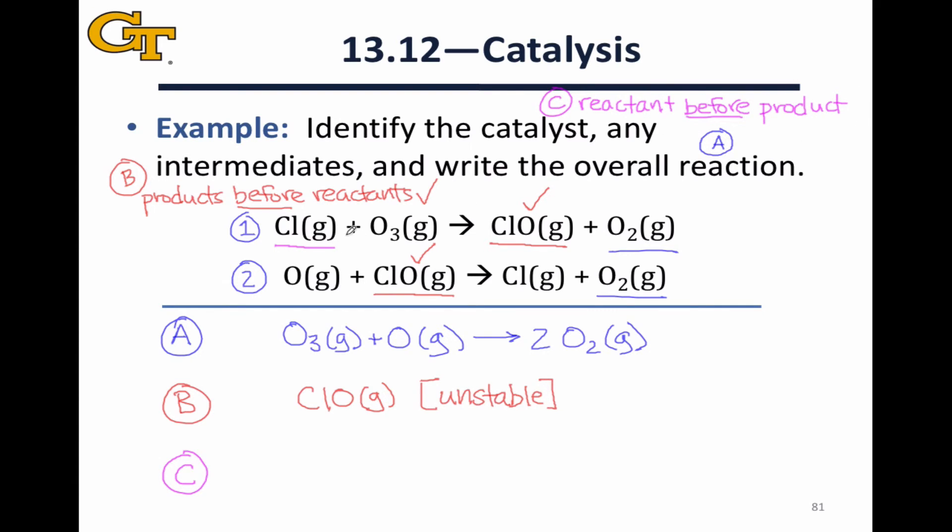So chlorine is a reactant before it's a product. Therefore, it's a catalyst. Notice that the catalyst can be chemically transformed into something else in the course of the mechanism. It becomes a part of CLO in the course of this mechanism. What makes it a catalyst is the fact that it's regenerated at the end of the reaction.